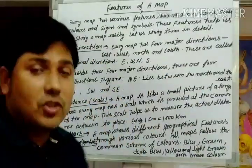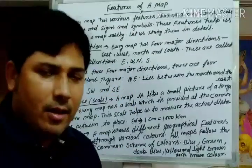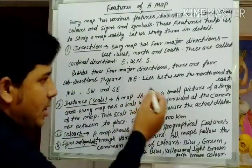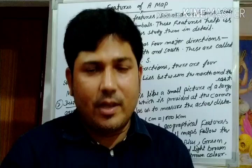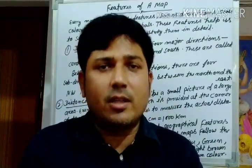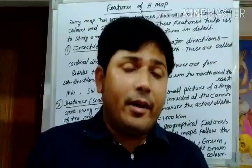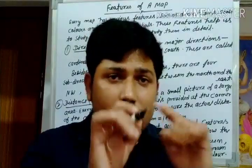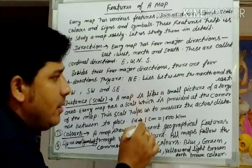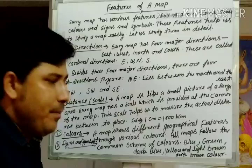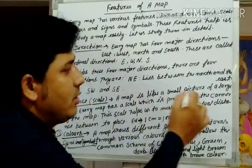The next feature is scale. A map is like a small picture of a large area. For example, you can see India — a very large area — represented in a small map. India's area is 3.28 million square kilometers, yet it fits on a small page. Every map has a scale provided at the corner of the map, and this scale helps us to measure the actual distance.